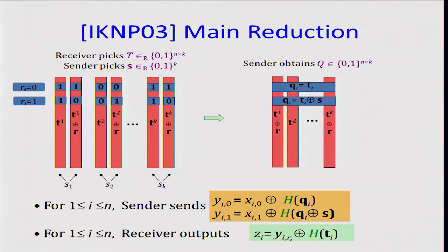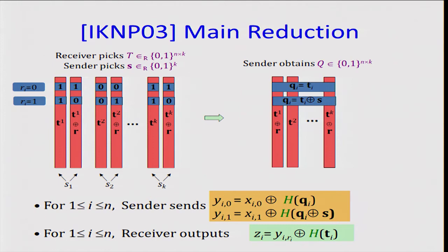In this case, note that the receiver knows TI but will not know TI XOR S. So in the first case, he will know QI but not QI XOR S. And in the second case, he will know QI XOR S, which is TI, but not QI. This says that maybe we can use QI as well as QI XOR S as masks for the OT. But then we have to destroy correlations between different rows of this matrix. So we use a random oracle to destroy these correlations. Then the receiver will pick his output depending on H of TI. This is how we unmask them.